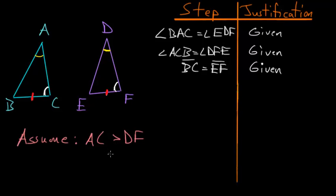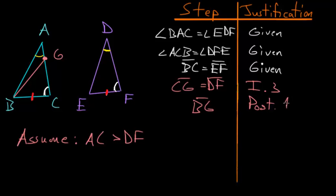Now with this assumption in mind that AC is bigger than DF, we can take a portion of this line AC and cut it at point G, such that the line CG is equal to the line DF. We can do this because of Book 1, Proposition 3. And then let's connect B and G. We just created the line BG due to Postulate 1.